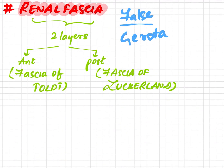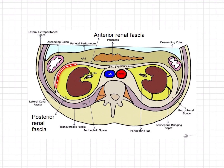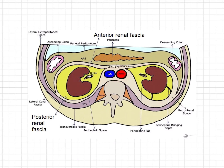Medially, the anterior layer passes in front of the renal vessels, and the posterior layer fuses with the fascia covering the quadratus lumborum and the psoas major. Laterally, both layers fuse and continue with the fascia transversalis. This is all about the renal fascia.